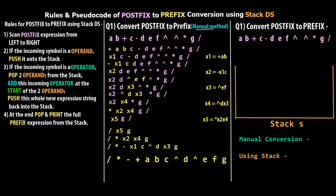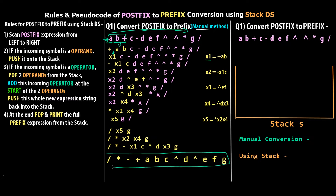I've already discussed the manual method in the previous tutorial, so I'm just quickly going to show you the result. We will then take that result and cross-check it with our conversion using stack data structure. This is how the entire process goes for the manual process: you take the postfix expression, start from left to right, find the first instance of two operands and one operator, and convert it to its prefix format.